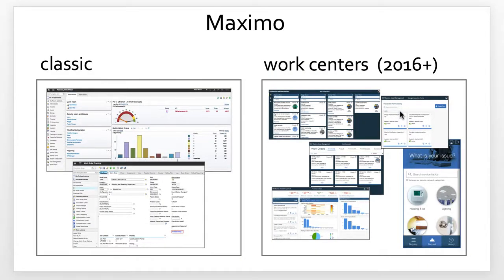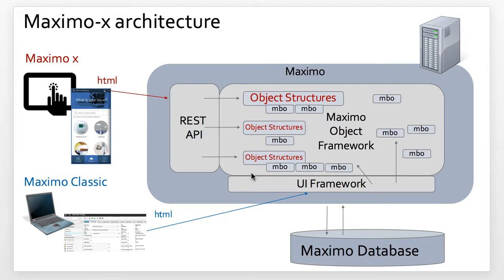To recap at a very top level, Maximo work centers were introduced in 2016. They supplement Maximo Classic by enabling role-specific applications in a responsive display. Enabling the responsive display is the change in architecture for Maximo X. When a user accesses a Maximo X work center, the way they get information displayed to them is very different from Maximo Classic. Key to the Maximo X architecture is the role of REST APIs and the object structures themselves.